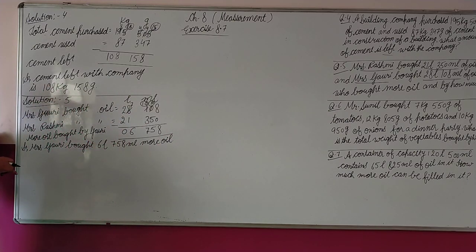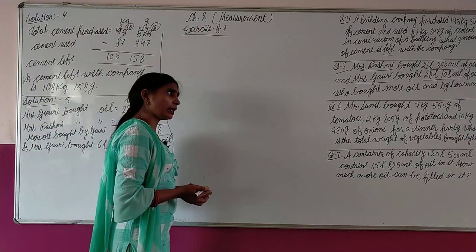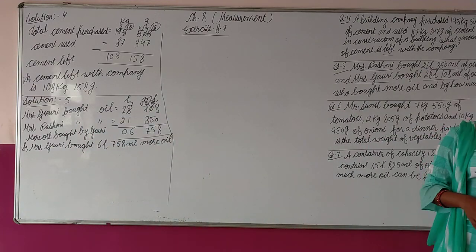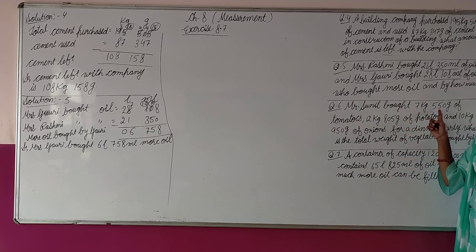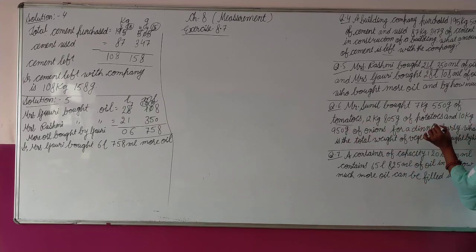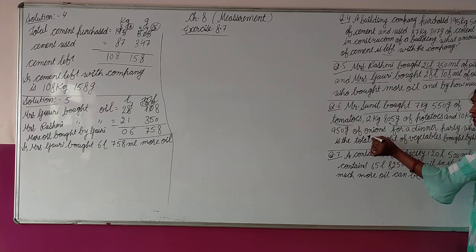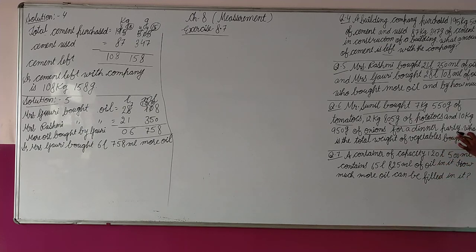Now next question, question number 6. Mr. Sunil bought 7 kg 550 g of tomatoes, 12 kg 805 g of potatoes, and 10 kg 950 g of onions for a dinner party. What is the total weight of vegetables bought by him?